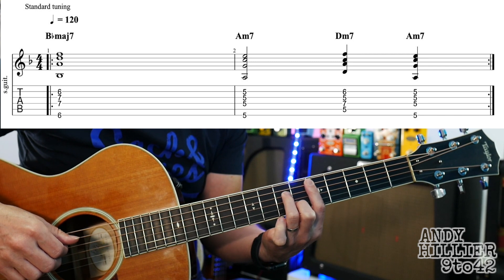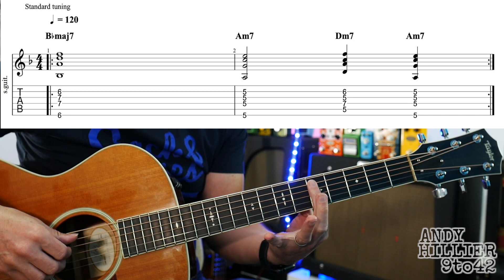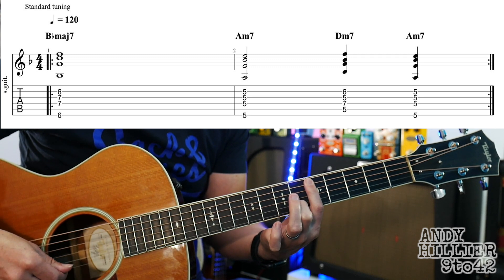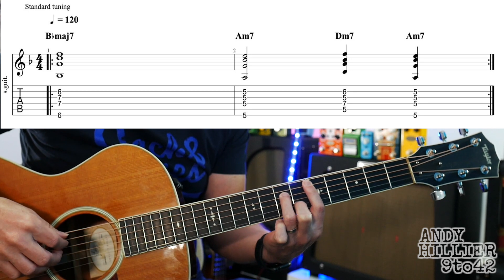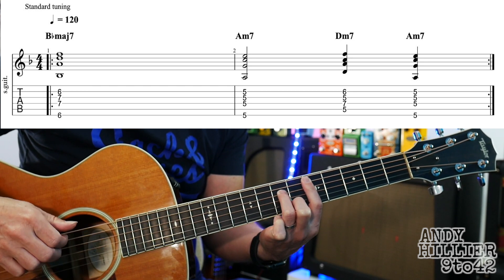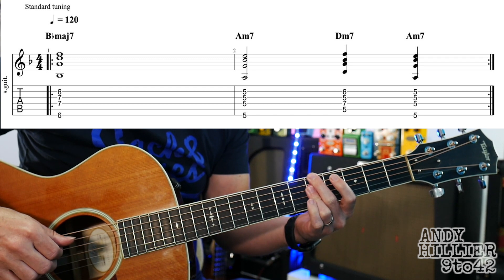Then it goes to Dm7, which is your first finger barred from the A5 all the way down. Put your second finger on the B6 and third finger on D7. I'm playing the middle four strings on that, Dm7, then back to Am7.